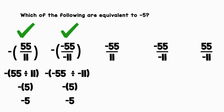Negative 55 over 11 can be rewritten as negative 55 divided by 11. We have one negative and one positive, so our quotient is going to be negative: negative 5. This one gets a check too.